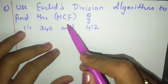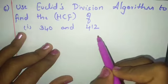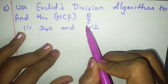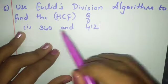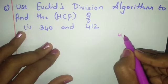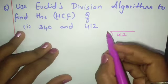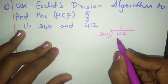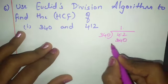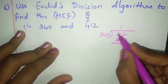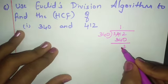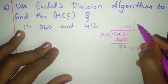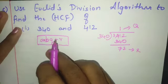Use Euclid's division algorithm to find the HCF of 340 and 412. First, take the largest number and divide it by the smallest number. So divide 412 by 340. 340 into 1 is 340. Borrowing gives 11 minus 4 is 7, so the remainder is 72 and the quotient is 1.